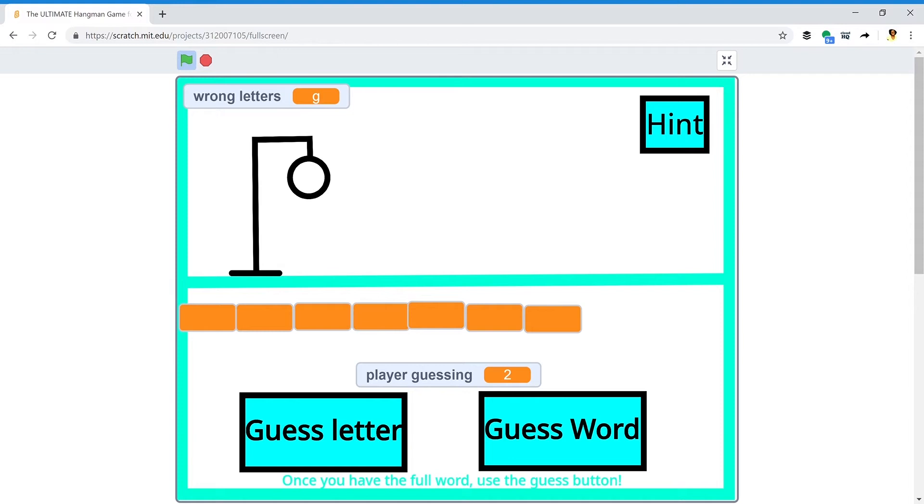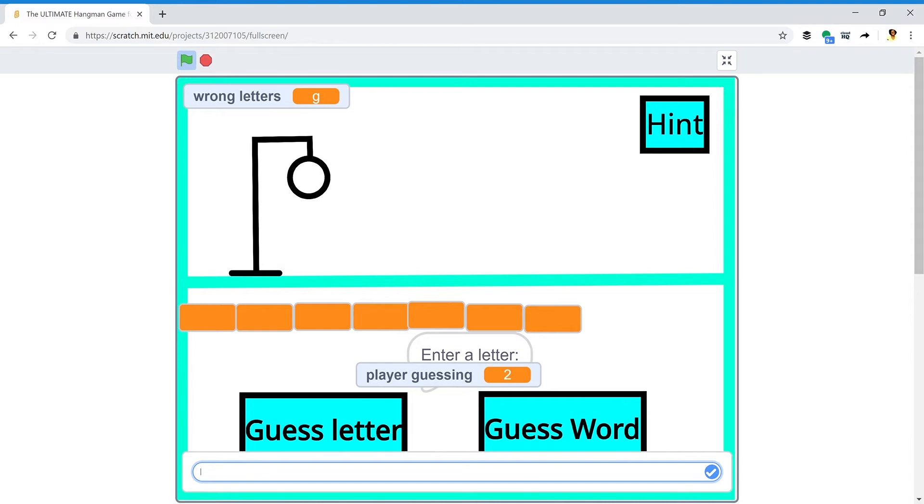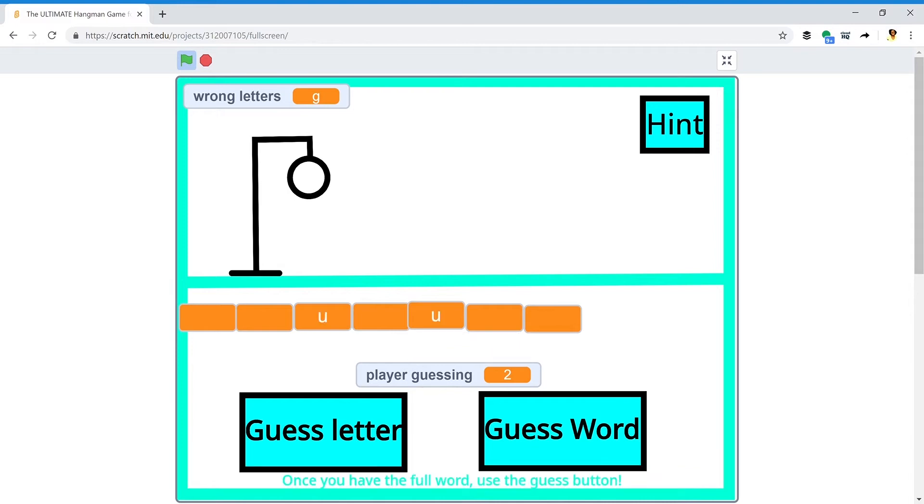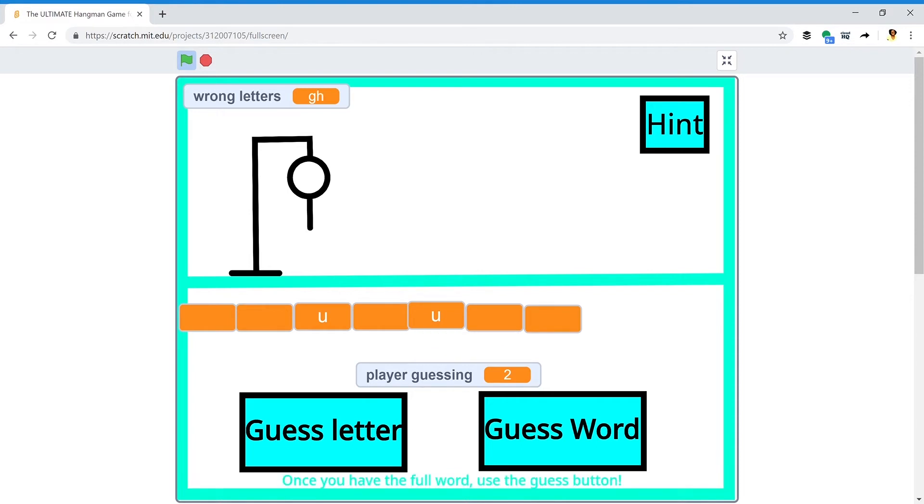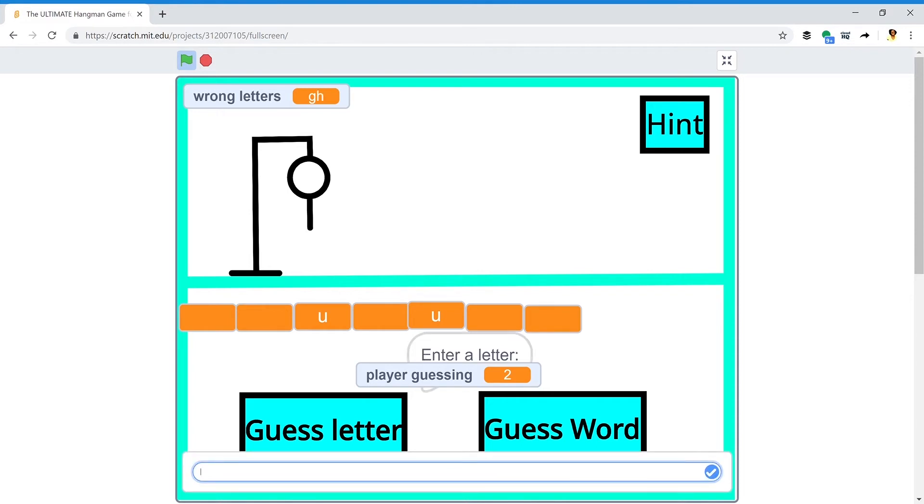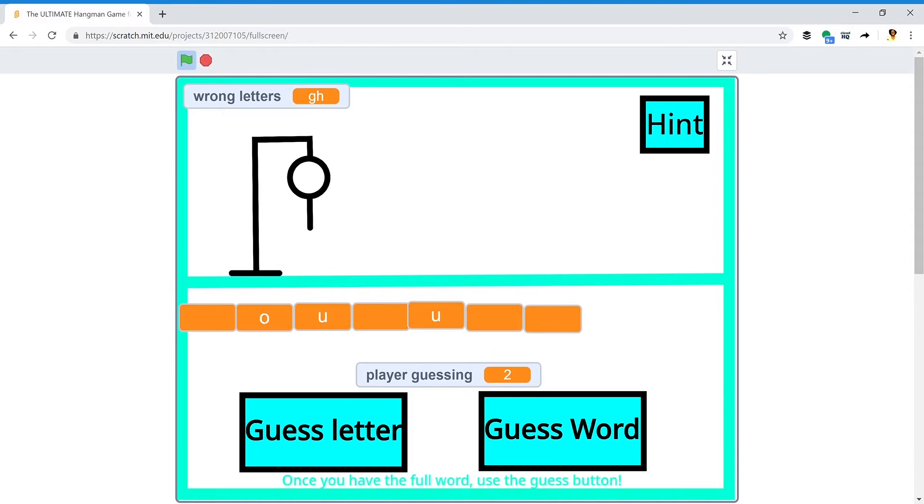Alright, that's fine. So I press guess letter again. I'll guess U. It worked! So I don't have to guess that letter twice, it'll put it up twice for me. Yeah, there's two U's. Okay, I don't know it. Can I guess again? Oh boy, his body's there now. I'm guessing again.